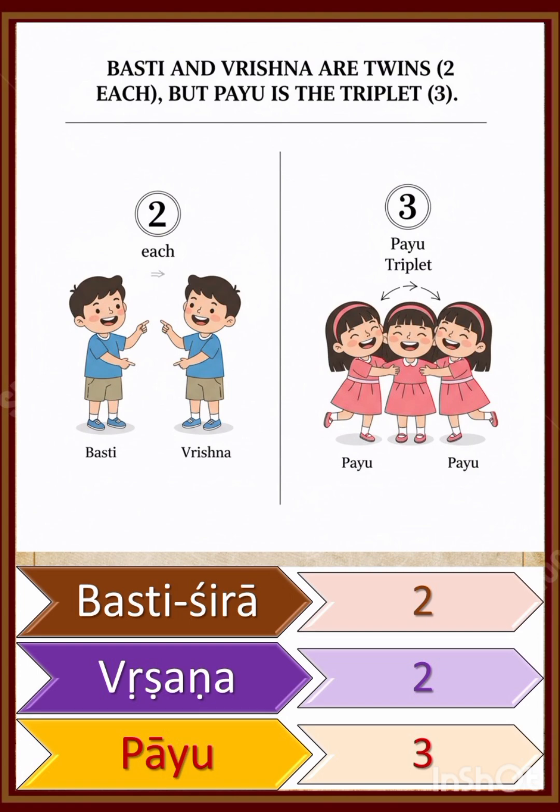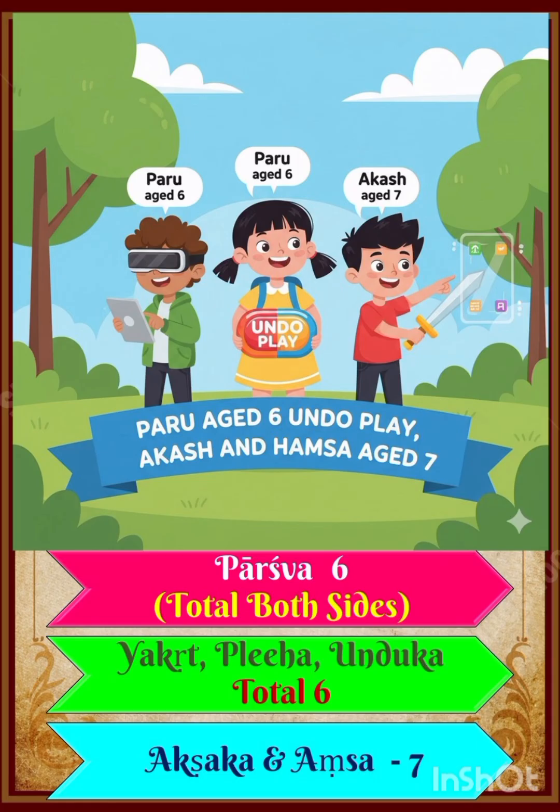So: Basti Sira 2, Vrishana 2, and Payu means 3. Paru age 6 — Paru means Parchwa, 6 total both sides. Andu play — Yagrith, Pleeha, Unduga, total 6. Agash and Hamsa age 7 means Akshaga and Amsa has 7 Peshi.